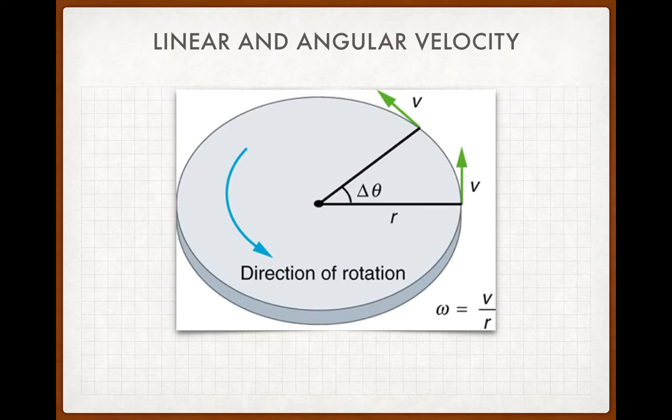So there ends up being a relationship between the angular velocity and the linear velocity, which is given at the bottom right-hand corner of that image. So the angular velocity is equal to the linear velocity over the radius.